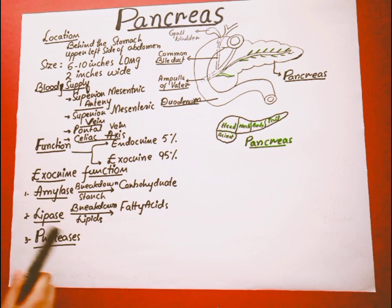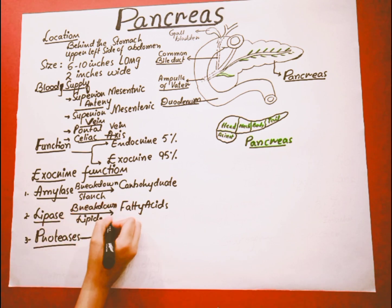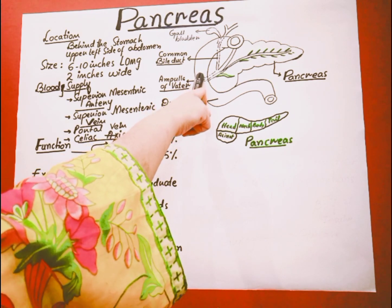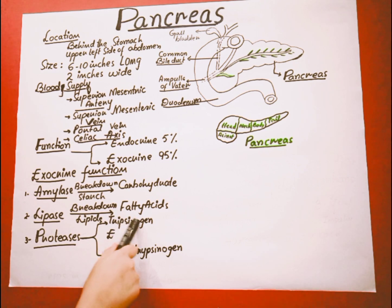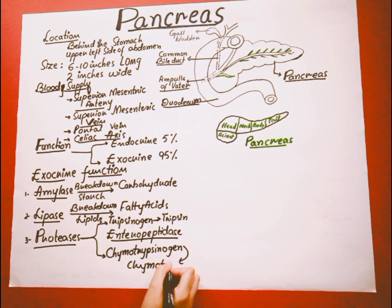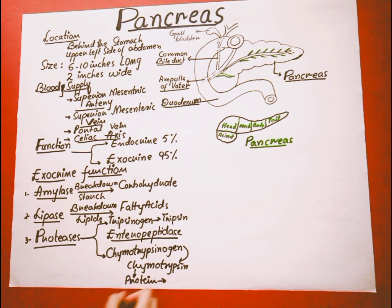Proteases contain two types of enzymes: trypsinogen and chymotrypsinogen. When these enzymes enter the small intestine, the enzyme within the small intestine called enteropeptidase converts the inactive trypsinogen into trypsin. This trypsin and chymotrypsin help in the digestion of proteins, breaking down the complex form of protein into amino acids.